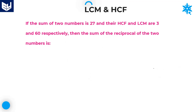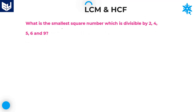Let's move on to the next question. What is the smallest square number which is exactly divisible by 2, 4, 5, 6, and 9? First, we need to find the LCM of all these numbers, because if any number is divisible by all these numbers, it must be divisible by the LCM of those numbers.